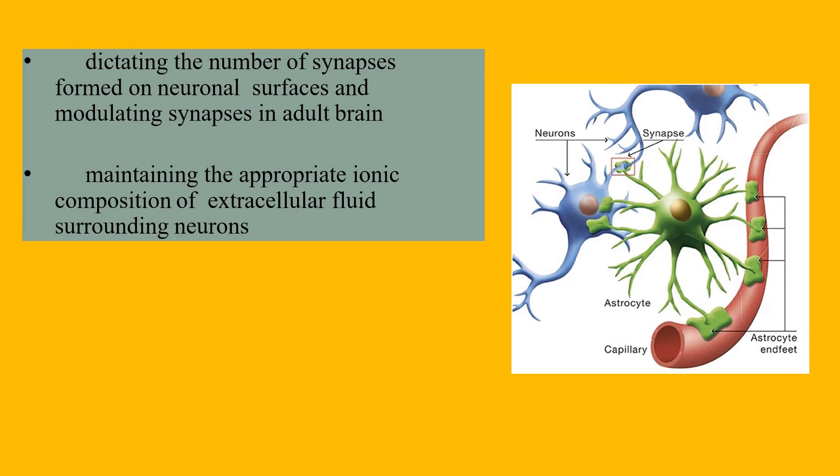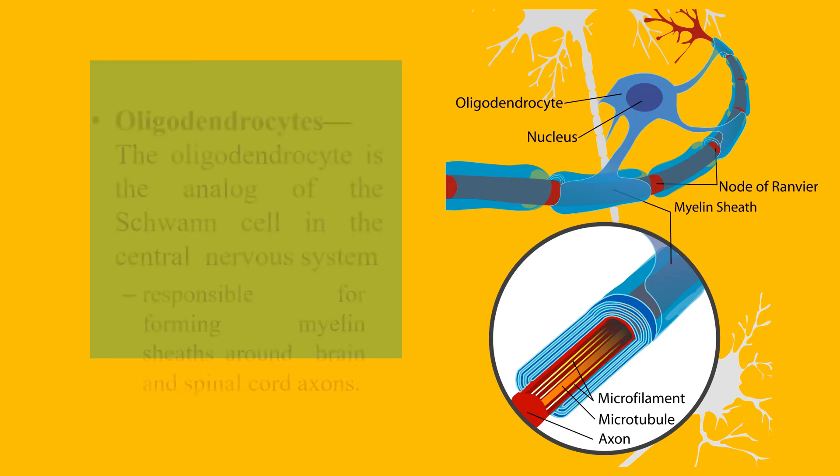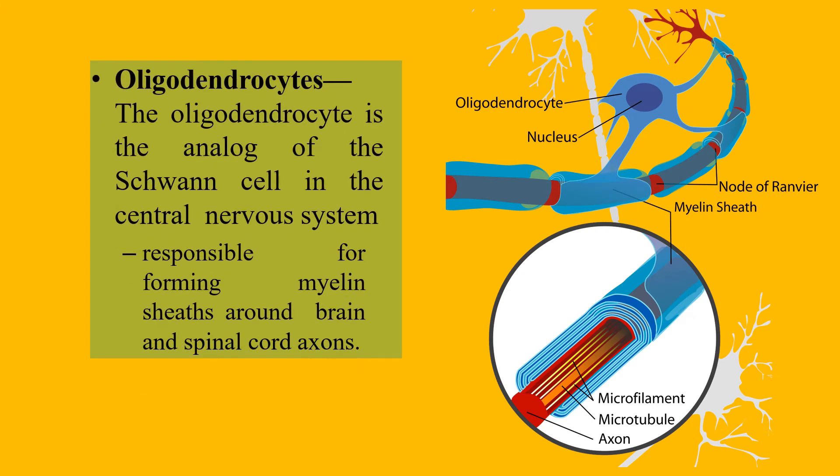Next, we will be talking about oligodendrocytes. Oligodendrocytes are the analog of the Schwann cell in the central nervous system, responsible for forming myelin sheaths around brain and spinal cord axons.